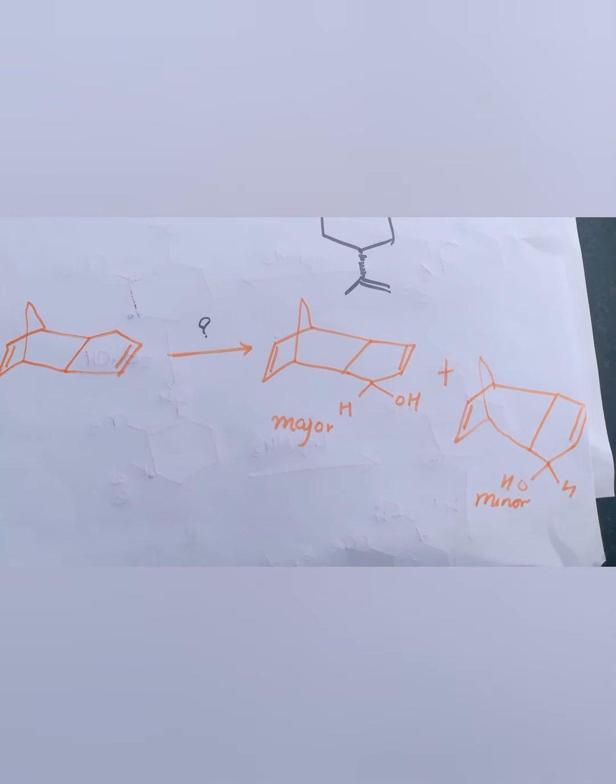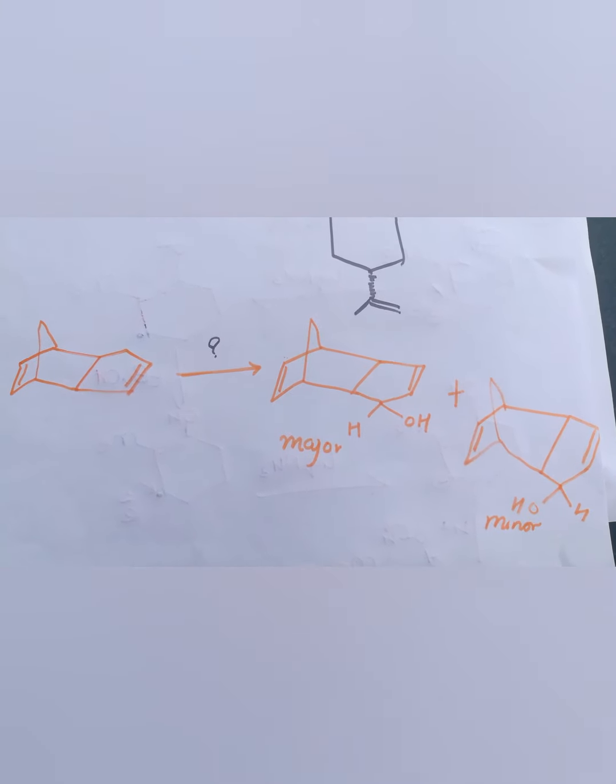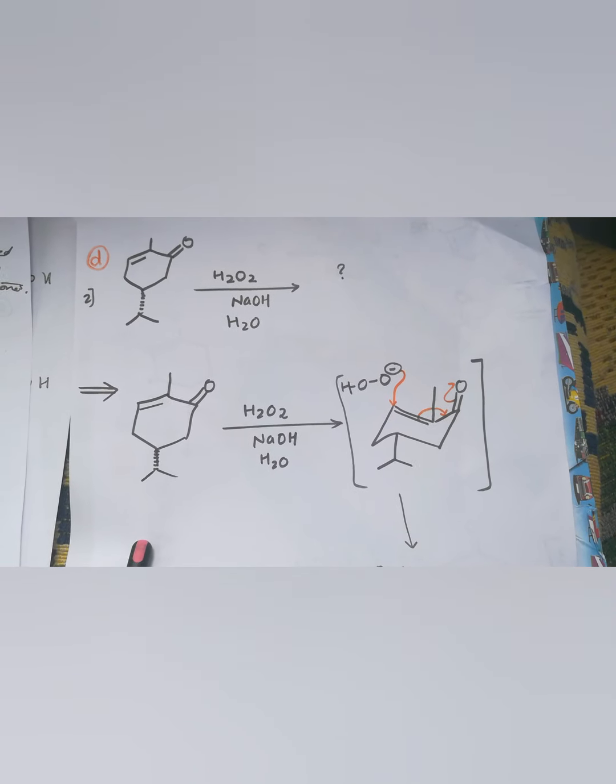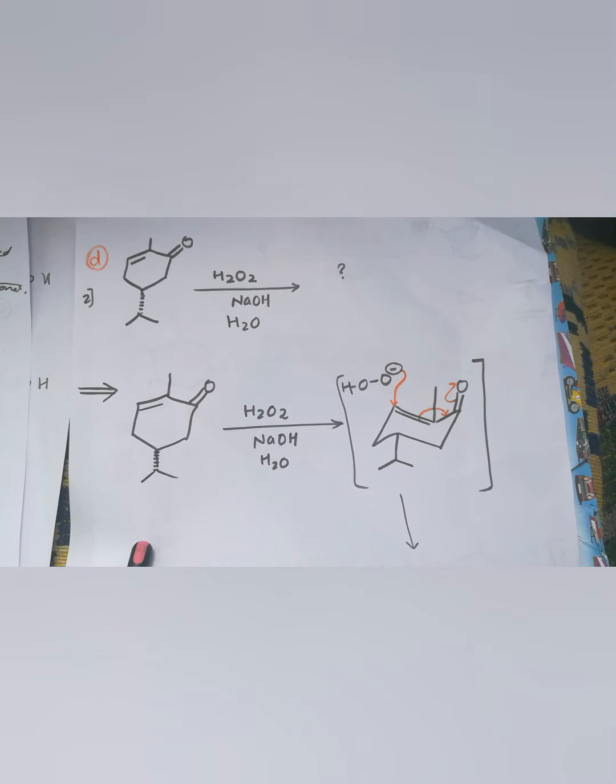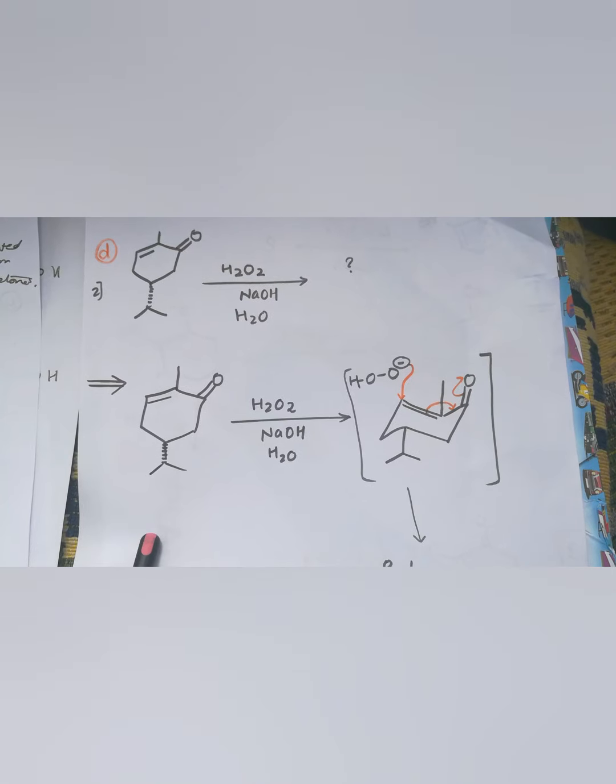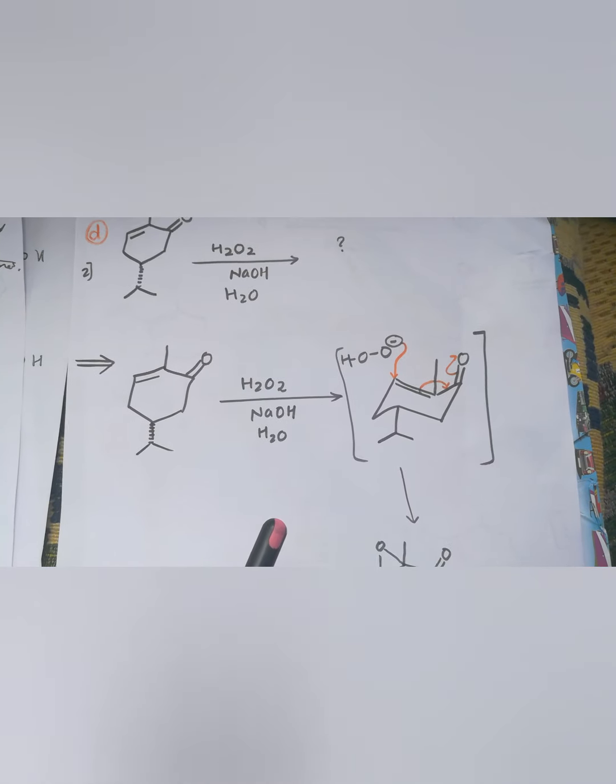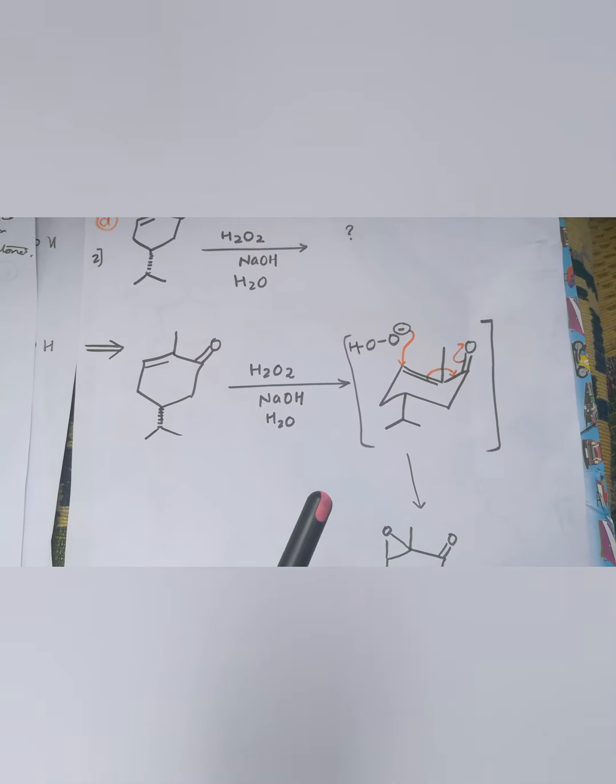This was the question which was asked and the reagent used is peracid, NaOH, and H2O. Over here, MCPBA is used. Instead of it, peracid is used which also leads to form an epoxide. Therefore, the answer to it is D.